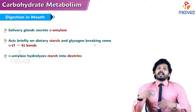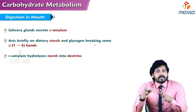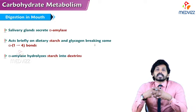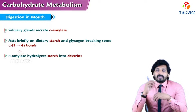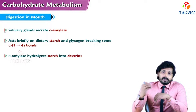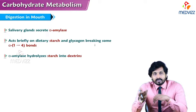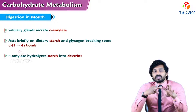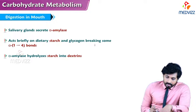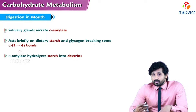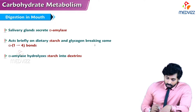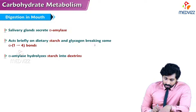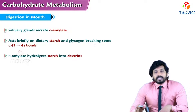Starch is composed of amylose and amylopectin. Amylose has alpha-1-4 glycosidic linkages, while amylopectin has both alpha-1-4 and alpha-1-6 glycosidic linkages. Salivary alpha-amylase works only on alpha-1-4 glycosidic linkages. Since we keep food in the mouth for only about 10 to 20 seconds before swallowing, there may not be sufficient time for alpha-amylase to completely act on the starch. Alpha-amylase hydrolyzes starch and glycogen — starch from vegetable sources, glycogen from animal sources — producing alpha-limit dextrins.